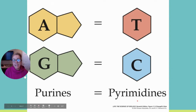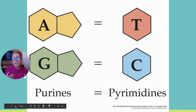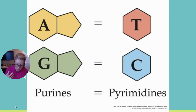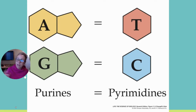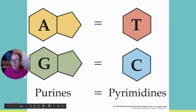We know today that DNA is made of adenine, thymine, guanine, and cytosine. Adenine and guanine have double rings and are called purines; thymine and cytosine have a single ring and are called pyrimidines. In base pairing, A binds with T and G binds with C — a purine always pairing with a pyrimidine. But this was not always understood. Chargaff is the one who helped us understand it, analyzing DNA base content in the 1940s.